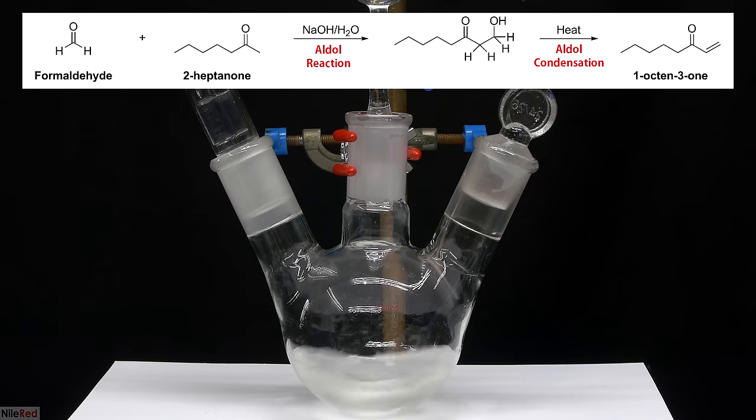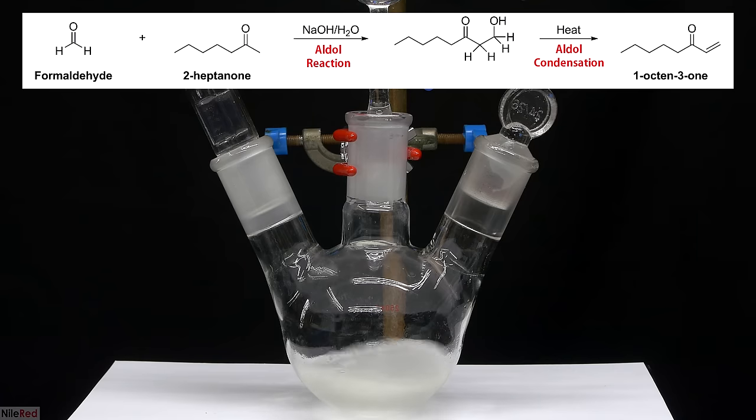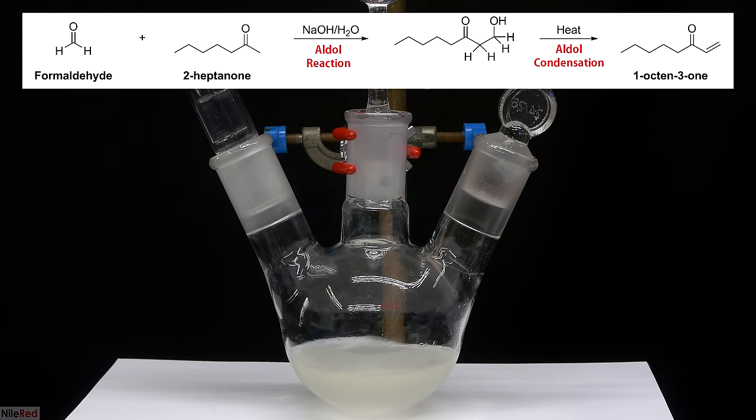This is the overall reaction scheme for both the aldol reaction and the aldol condensation. The first part is the aldol reaction, where we react formaldehyde and 2-heptanone to produce an intermediate. When the intermediate is heated, it will undergo a dehydration reaction to form 1-octen-3-one. That's just a very quick overview though, and I'm going to break it down mechanistically.